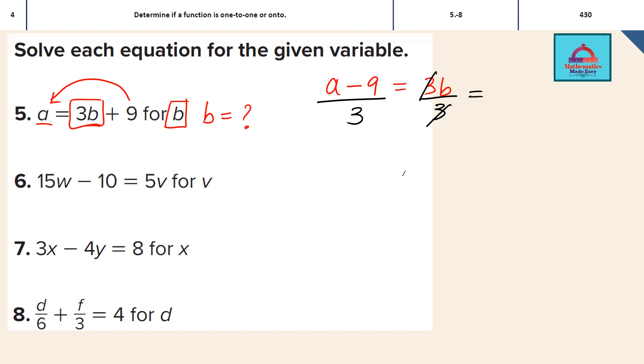So what we get from this equation is that value of B is going to be A minus 9 divided by 3. So that is your answer for question 5.